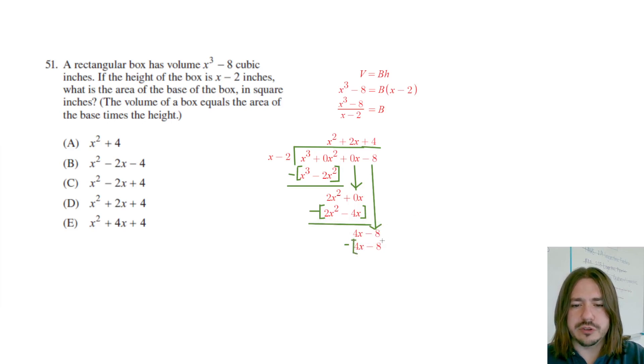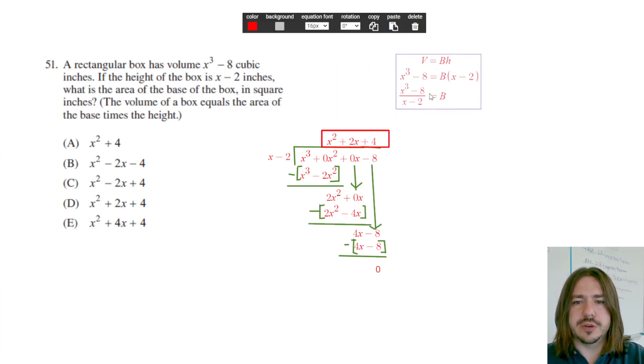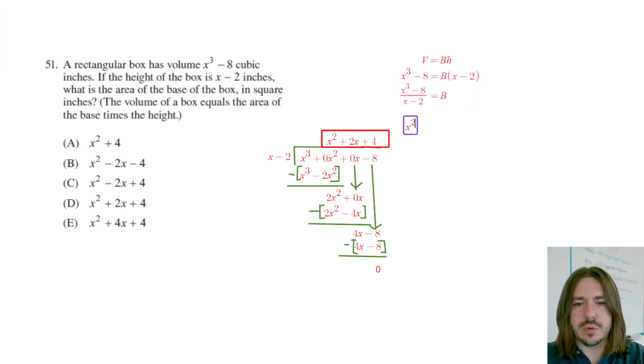As we should remember from elementary school, when you divide and you have no remainder, that means that your divisor is a factor of the dividend. So this divides evenly, there's no remainder. We did the division here, our quotient is what's written up here. So x cubed divided by x minus 2 is going to be x squared plus 2x plus 4. That's how you would do it using long division.